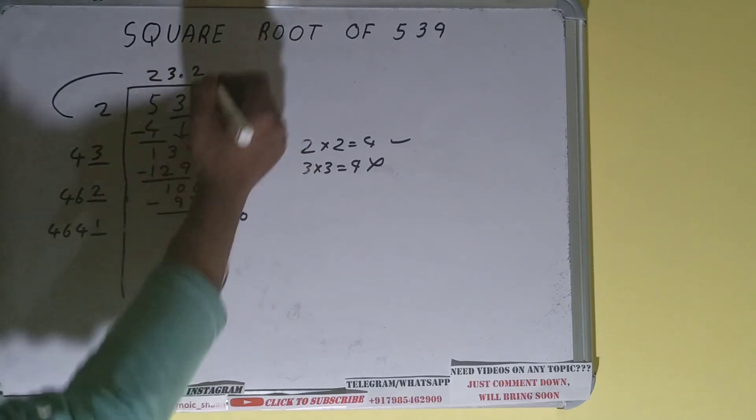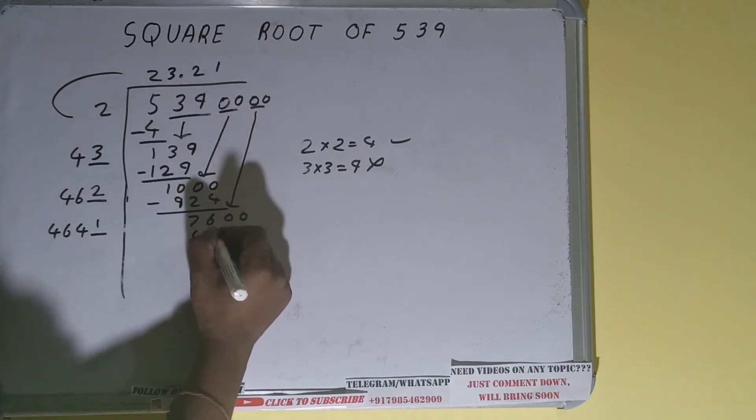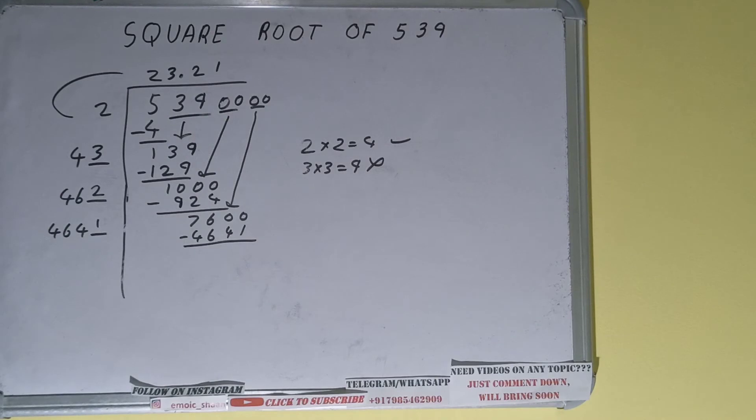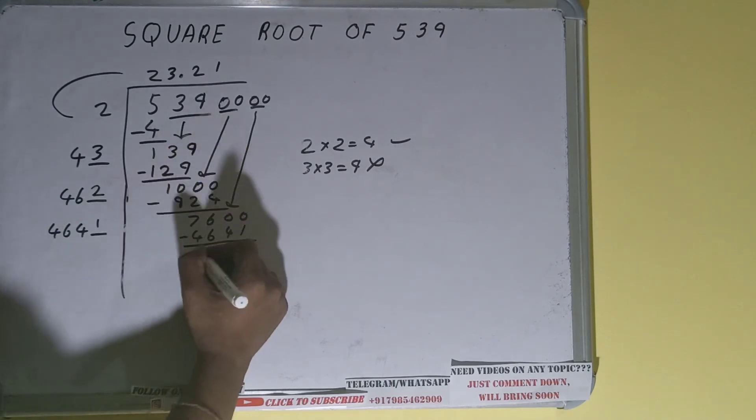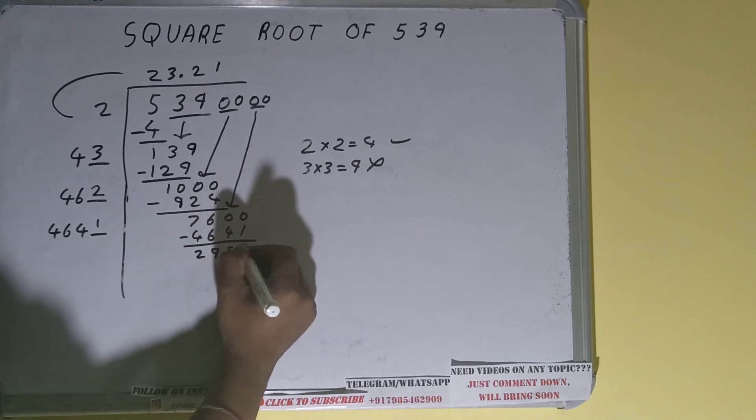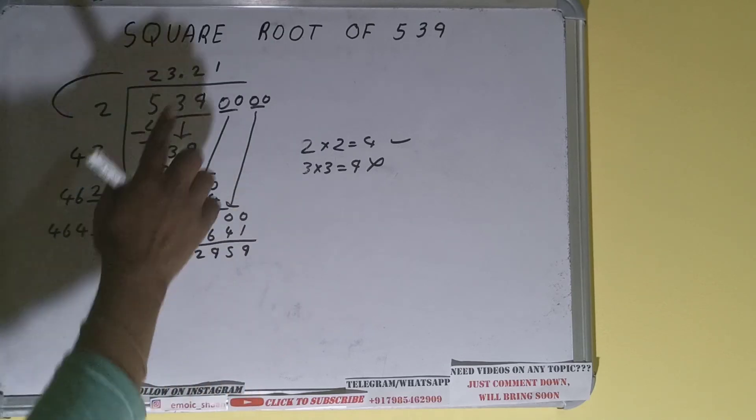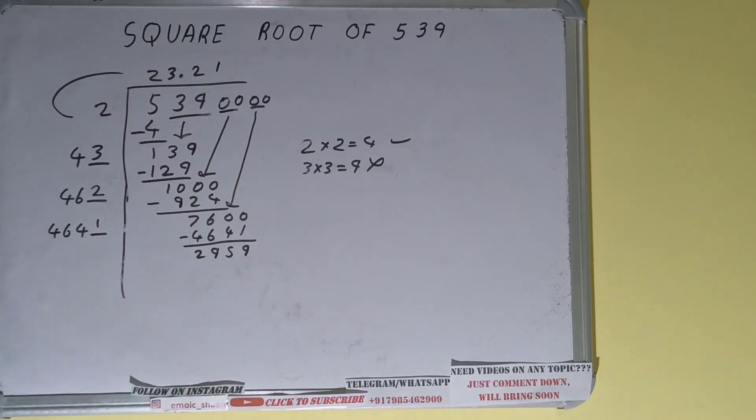So we can try one time. 4641, subtract it, and 2959 will be left. Now 4641 into one we did, so add both. So 4641...